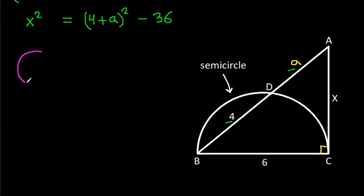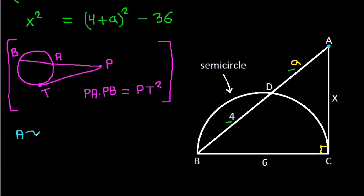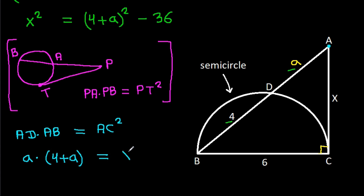In any circle, from any external point P, if AB is any chord and PT is a tangent, then PA times PB equals PT squared. Here, from point A: AD times AB equals AC squared, so A times (4 + A) equals X².